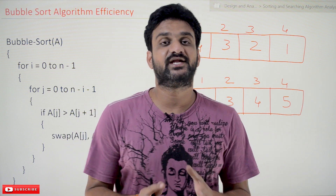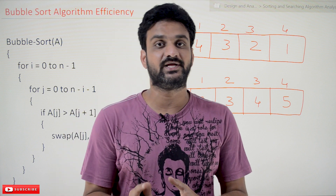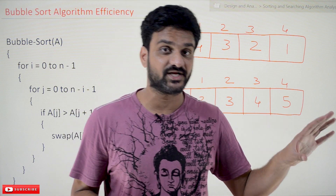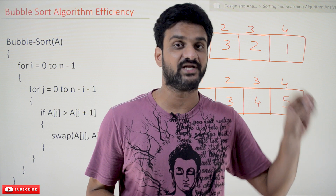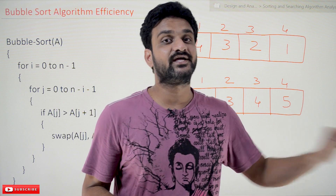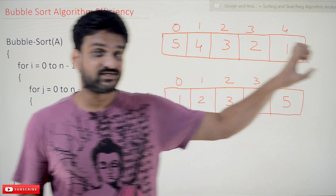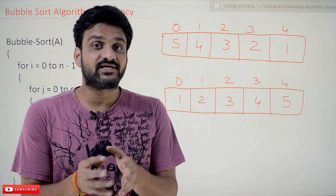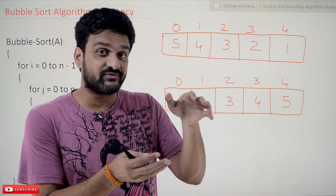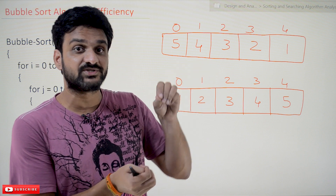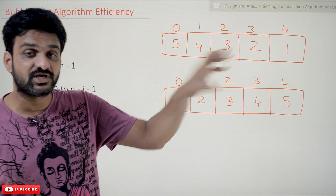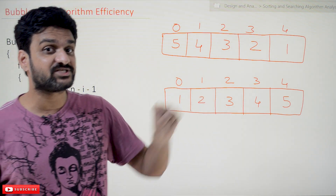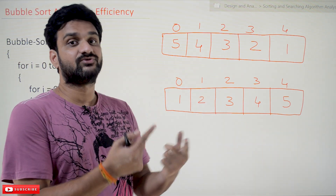Every video in our channel is going to be part of a course or a playlist. Our suggestion is to follow the entire course so that you can have a better understanding of the concepts. The link for the playlist is provided in the description below. In the data structures course where we discussed bubble sort, we discussed two different types of bubble sort algorithms: one is the original bubble sort algorithm, the other is the optimized bubble sort algorithm.